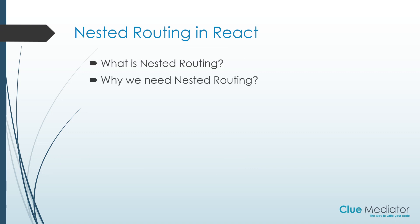So what is nested routing and why do we need it? Let's say if you have a main route in your application and then you want some sub-routing for component loading, then you can use nested routes. For example, suppose you have a contact page or some other page that contains a few more sub-pages — at that time you have to implement nested routing.